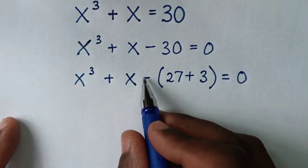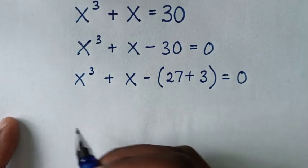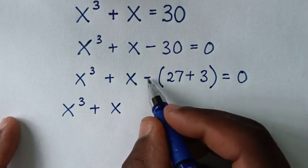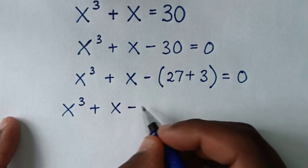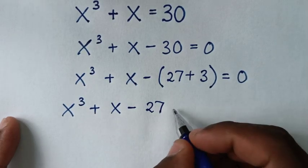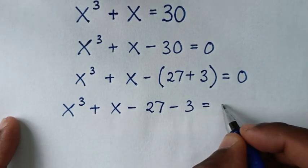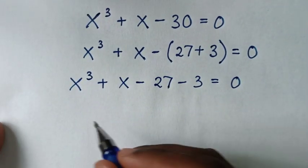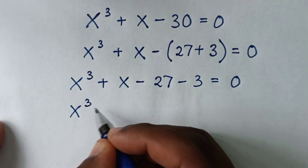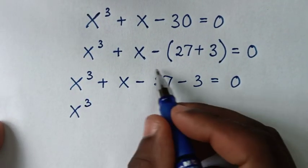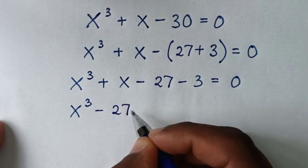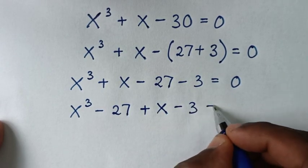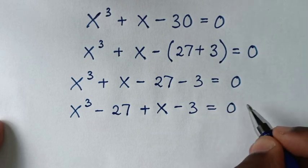We will take the negative inside the bracket, so it will be x³ + x - 27 - 3 = 0. Rearranging, this becomes x³ - 27 + x - 3 = 0.